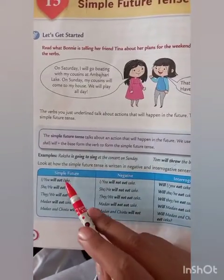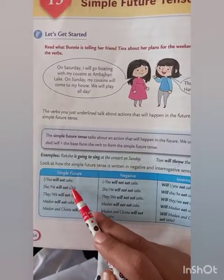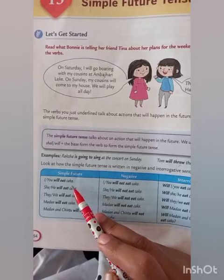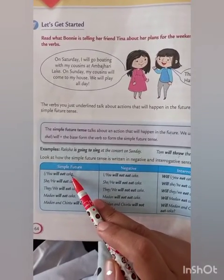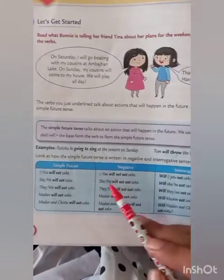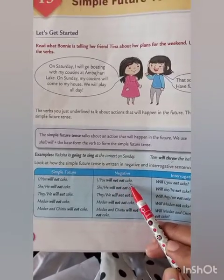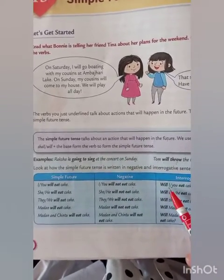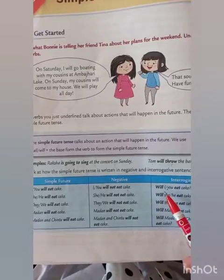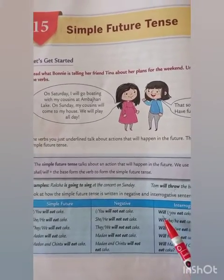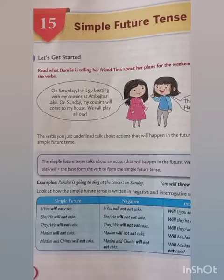Here are some examples of simple future tense. Affirmative: I will eat cake. Negative: I will not eat cake. In interrogative, we put will or shall before the subject, so the sentence becomes: Will I eat cake?